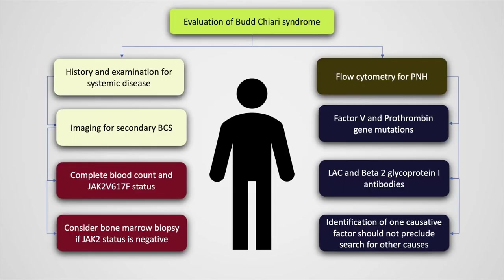The evaluation of Budd-Chiari syndrome begins with history and clinical examination, imaging for secondary Budd-Chiari syndrome, complete blood count, and JAK2 status; a bone marrow examination should be considered if JAK2 status is negative. We can also perform flow cytometry for paroxysmal nocturnal hemoglobinuria, factor V and prothrombin gene mutations, and lupus anticoagulant and beta-2 glycoprotein 1 antibodies. Identification of one causative agent should not preclude the search for others, as more than half of patients will have more than one cause.